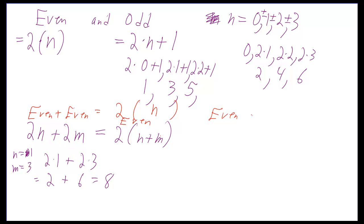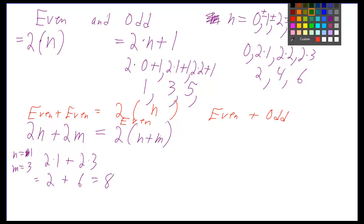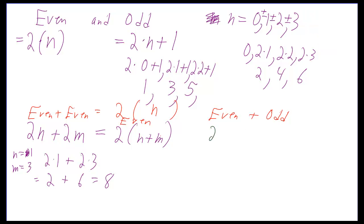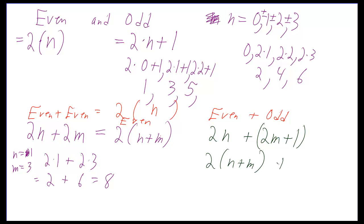Let's take a look at what happens if you do an even plus an odd. That means you have something in the form of 2n plus 2m plus 1, where the 2m plus 1 is the odd number. If you add this up, you get 2 times n plus m, just like before, but then you have a plus 1. We just proved that 2 times n plus m is an even number — it's in the form of 2 times n — but then we're adding 1. So an even number plus 1 is equal to an odd number. When you take an even and add an odd, you get an odd.